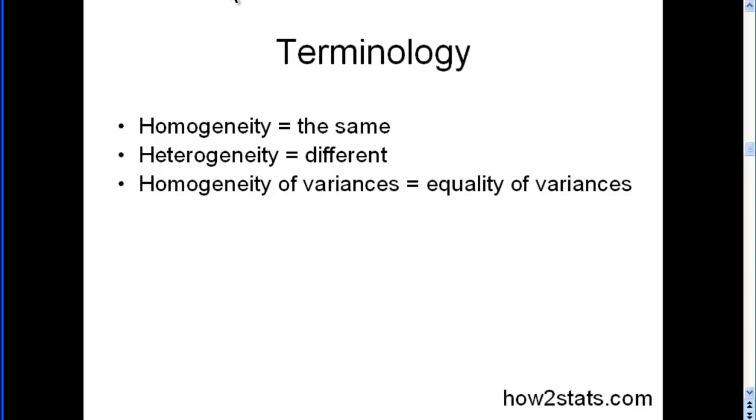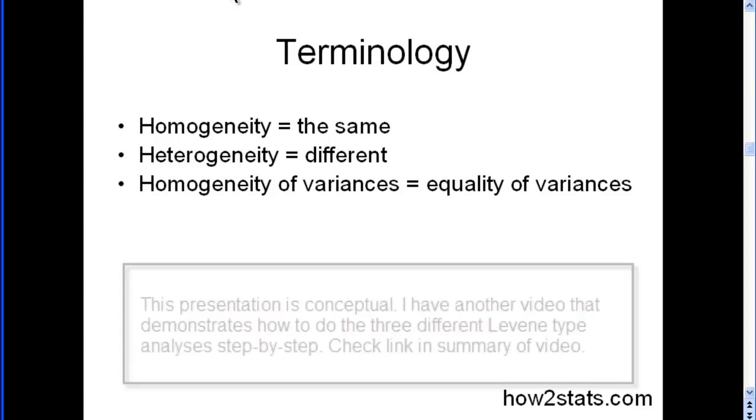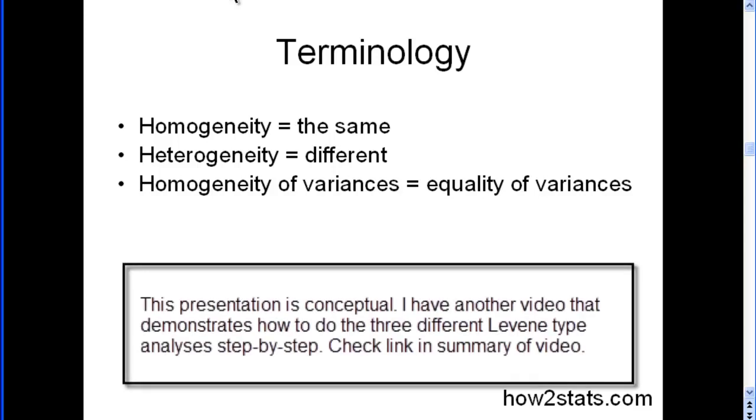So first some terminology. When people use the word homogeneity, they mean the same. Conversely, when they use the word heterogeneity, they mean different. So homogeneity of variances means the same thing as equality of variances. And people in statistics tend to use both terms about equally: homogeneity of variances and equality of variances.